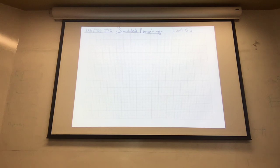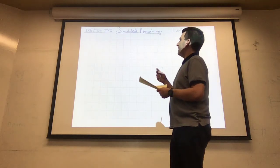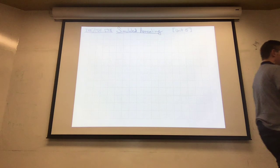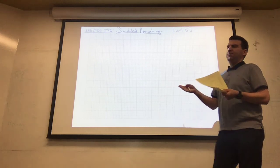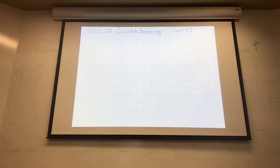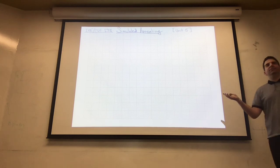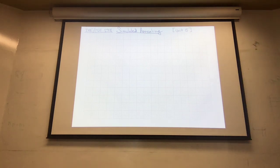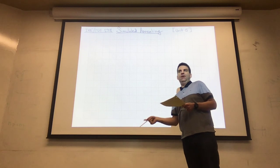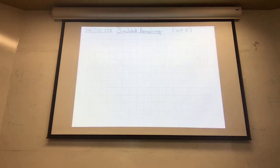Simulated annealing is an algorithm inspired by nature, but it's not biological — that's one of the big differences here. It originally didn't start as an optimization algorithm. How many people are familiar with MCMC methods — Markov Chain Monte Carlo? Simulated annealing was effectively born out of the first MCMC algorithm. So let's first ask: what is annealing?